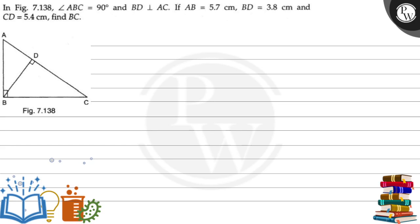The question says: in figure 7.138, angle ABC is equal to 90 degrees, BD is perpendicular to AC, AB = 5.7 cm, BD = 3.8 cm, CD = 5.4 cm. Find BC.